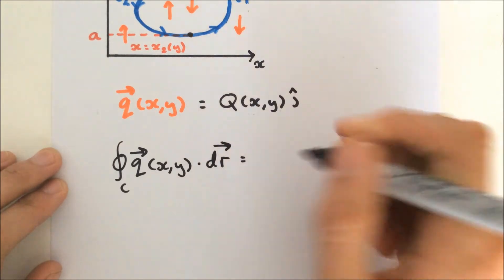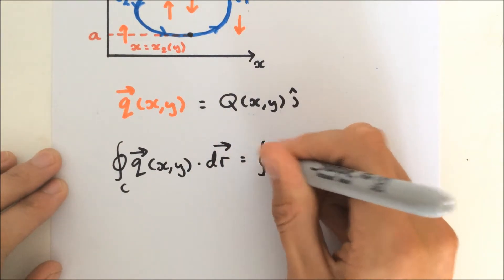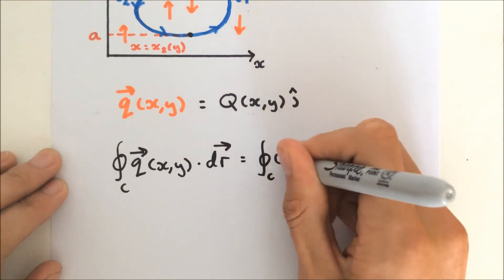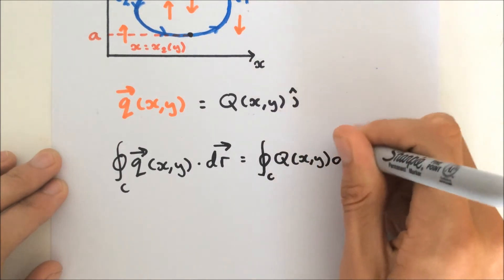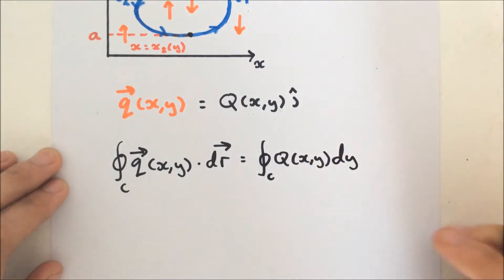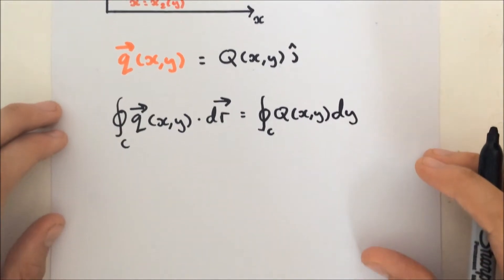That, of course, is equal to the integral of Q of xy, dy, all right, x and z components are zero.